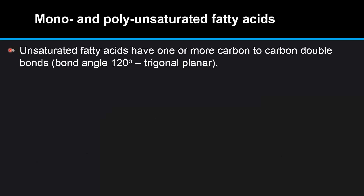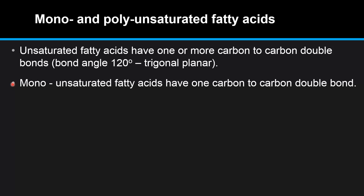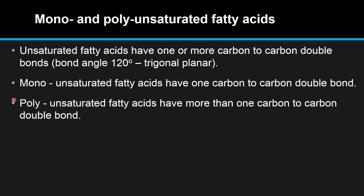Unsaturated fatty acids have one or more carbon to carbon double bonds, and the bond angle around the carbon to carbon double bond will be 120 degrees, which is trigonal planar. Monounsaturated fatty acids have one carbon to carbon double bond, while polyunsaturated fatty acids have more than one carbon to carbon double bond.